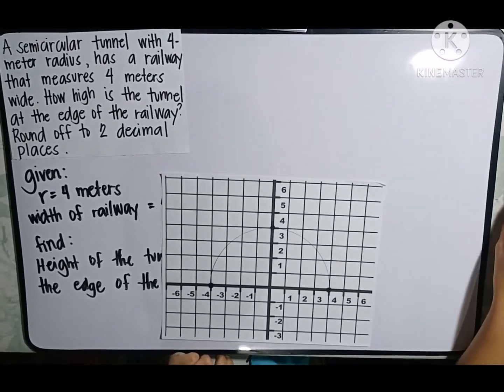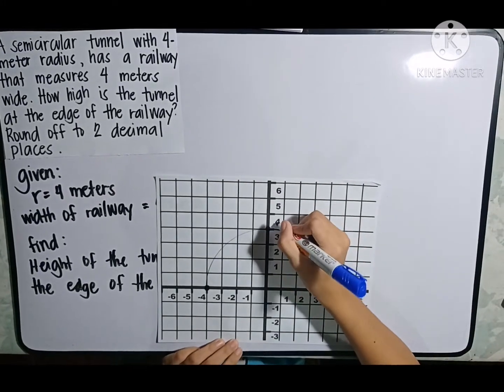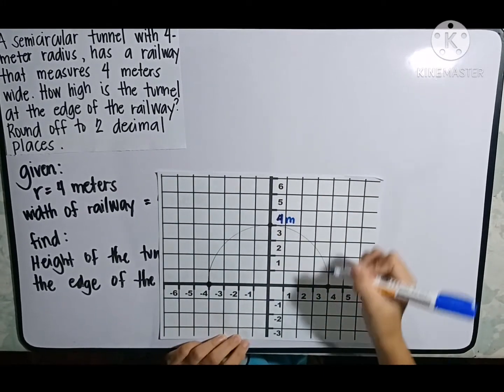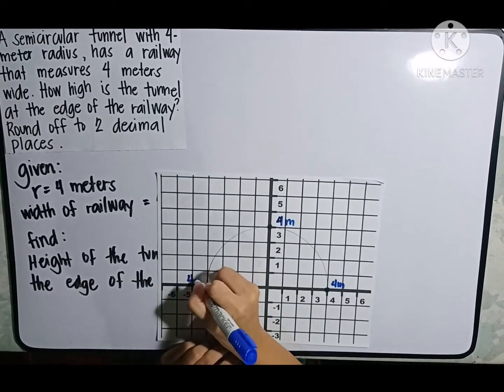But it isn't done yet. We should label the parts. This is the 4 meter radius, 4 meter radius, and the 4 meter radius.